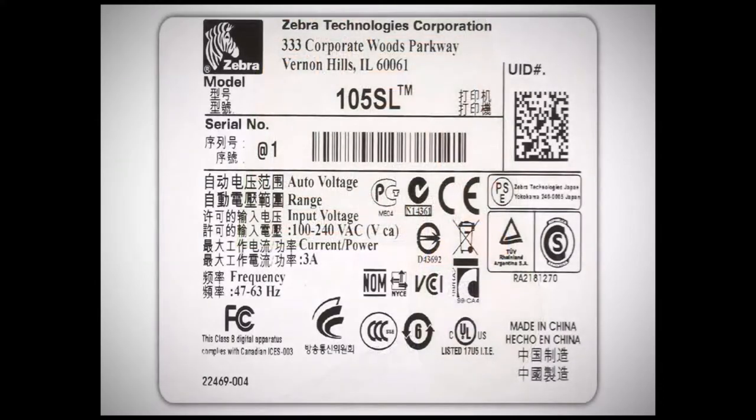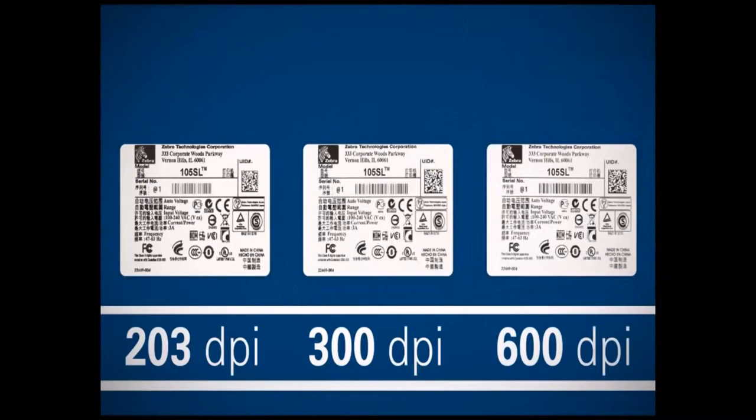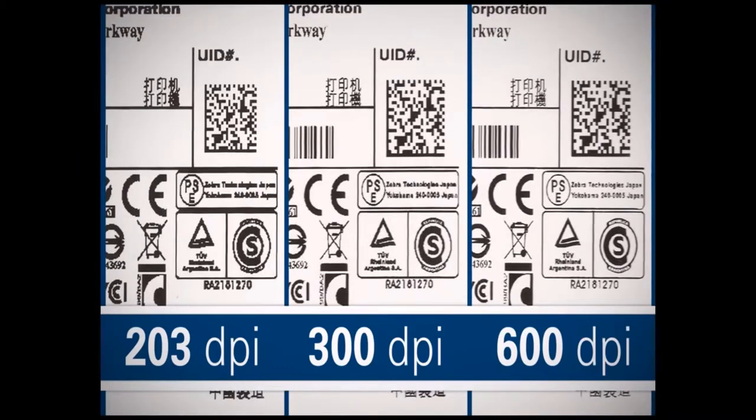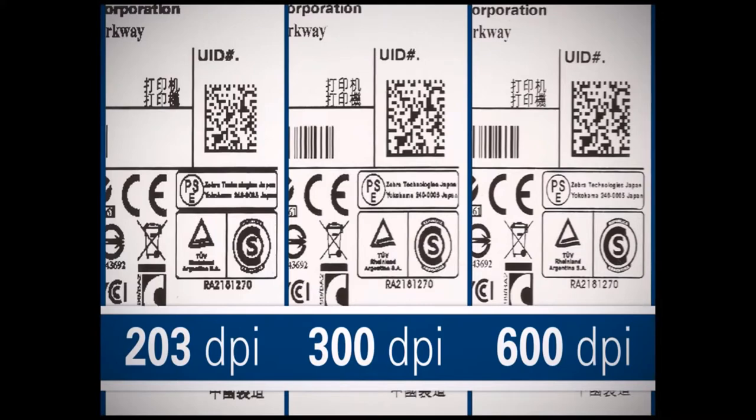Also, text, barcodes, graphics, and photos are very important to consider. Printing text and regulatory symbols with a font size 6 and under requires a 600 dpi printer so that the text is readable and the regulatory symbols are identifiable.